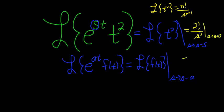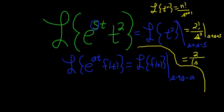So the final step is to just replace the s with s minus 5. So 2 factorial is 2, and then your s becomes s minus 5 — that's a minus there — so the answer is 2 over s minus 5 cubed. That's it.